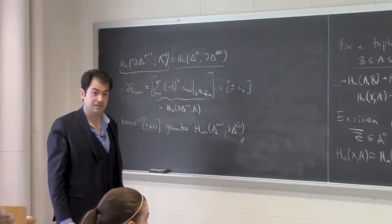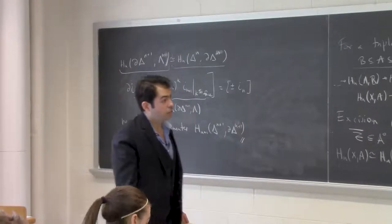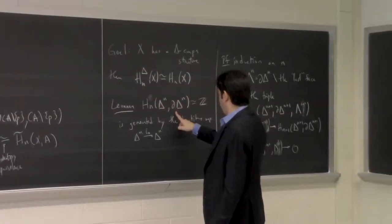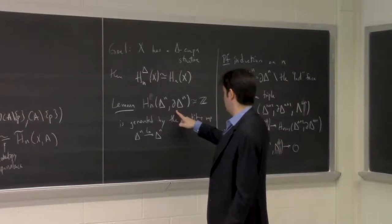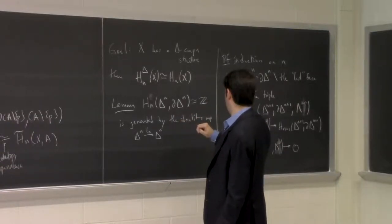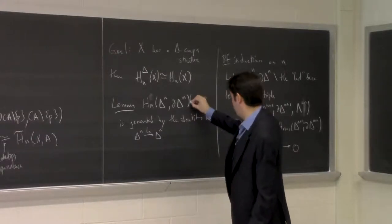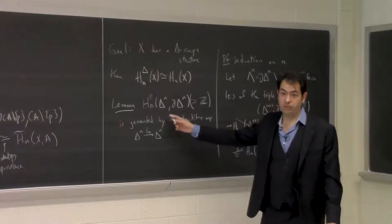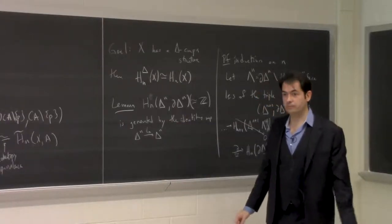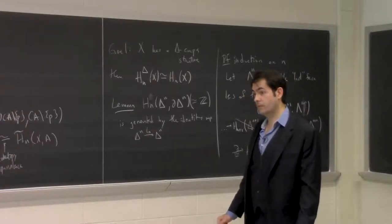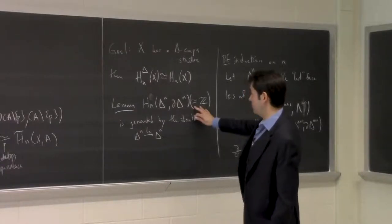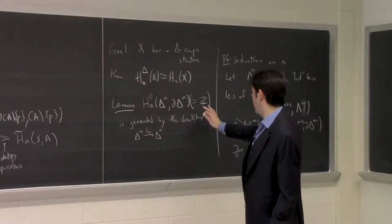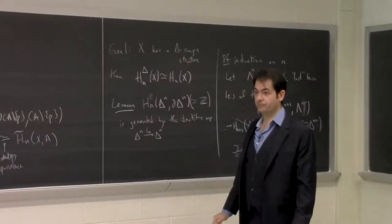About the base case: H_0(Δ^0, ∂Δ^0) — the zeroth relative group would be zero. So that statement would be wrong for the zeroth group. But the fact that it's generated by the identity map would be true; it would just be zero and the class of the identity map would be zero. We already know that the groups H_n(Δ^n, ∂Δ^n) ≅ ℤ because this equals H_n(S^n). We're just trying to give a generator.